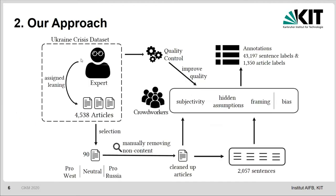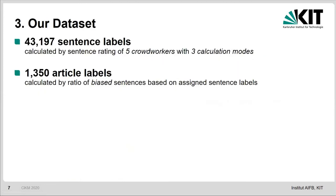Our approach looks like this. We start with a dataset — for example, the Ukraine crisis dataset — which contains about 4,500 news articles already annotated by experts with assigned leaning, used for correlation analysis later. We selected news articles annotated as pro-West, neutral, and pro-Russia, then cleaned up these articles, split the sentences, and let crowd workers annotate these sentences with respect to subjectivity, hidden assumptions, framing, and the overall bias. We also used quality control to improve the quality. Overall, this resulted in about 43,000 sentence labels, and each sentence was annotated by five crowd workers.